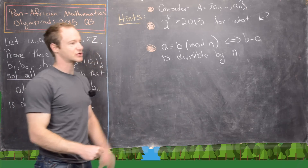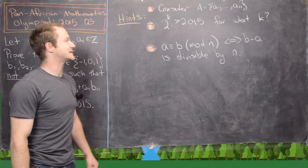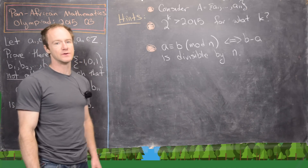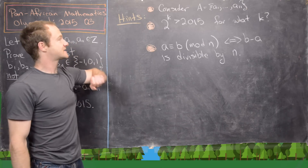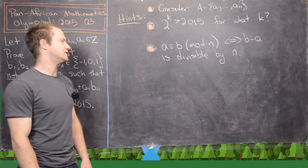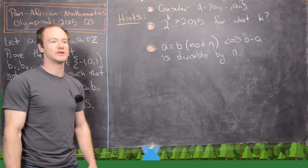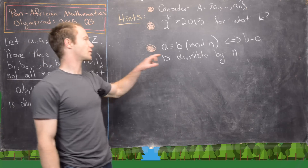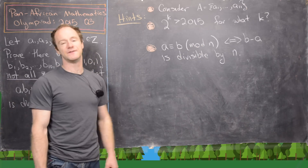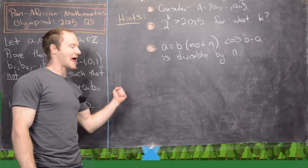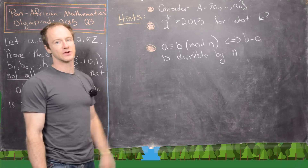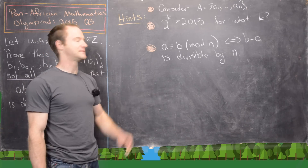I'm going to give you some hints. Maybe you can try this problem a little bit, and then we'll look at a solution. The first hint is to consider the set A, which is made up of the integers A1 through A11. Next, we know that we can find a power of 2 which is bigger than 2015 — think about what power of 2 that is. And finally, we're going to use the language of modular congruence. Recall that A is congruent to B mod N if and only if B minus A is divisible by N, or B and A have the same remainder when divided by N, and there are N such remainders: 0, 1, 2, all the way up to N minus 1.